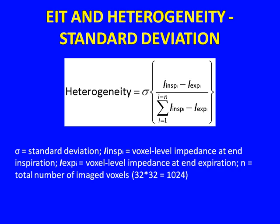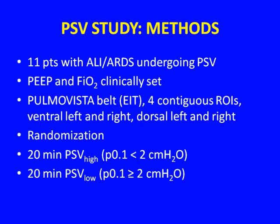The second method is more complex in calculation but conceptually simple: it is the standard deviation of the voxel-level change in impedance normalized by the total change in impedance of the imaged slice of the thorax. Basically, if all voxels are very close to the mean, the standard deviation will be very small. The more similar the voxels are to each other, the lower the heterogeneity. This is the method we chose as clinically relevant.